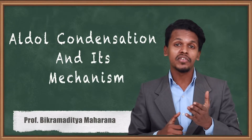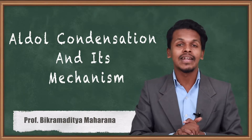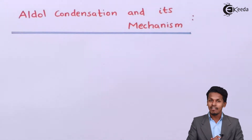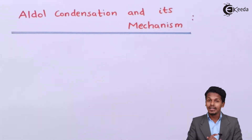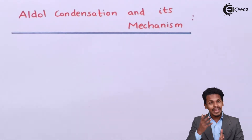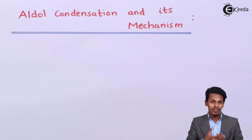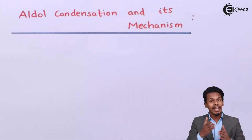Now we are going to talk about aldol condensation. What is aldol condensation, what is the product that has been formed, and what are the special criteria? We understand that whenever an aldehyde and ketone — both consisting of alpha hydrogen atoms — react with each other in the presence of a strong base like NaOH or KOH, the product formed is known as beta hydroxy aldehyde or beta hydroxy ketone, called aldol and ketol respectively.